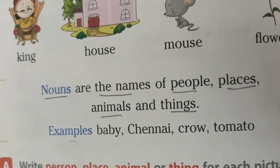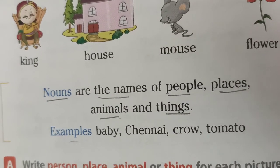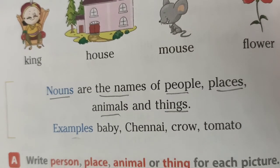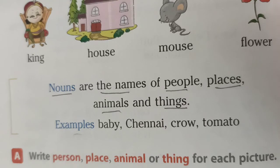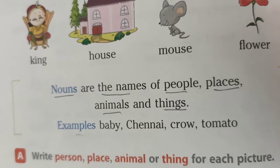For example: Baby, Chennai, Crow, Tomato.